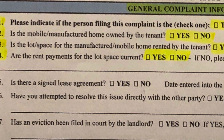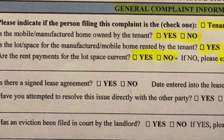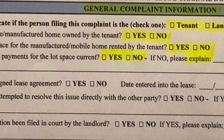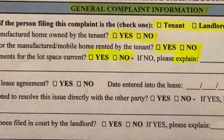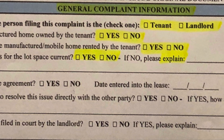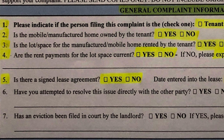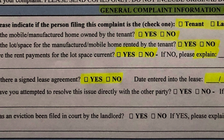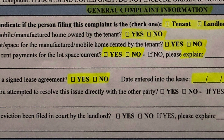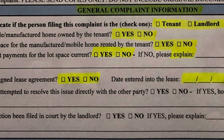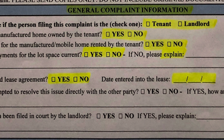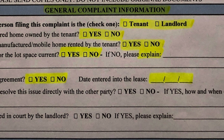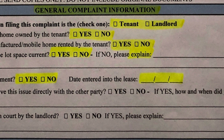Number four: are the rent payments for the lot space current? Mark yes or no. If they're not current, please explain why you are behind. Number five: is there a signed lease agreement? Mark yes or no and enter the date of your latest signed lease. If you do not live in a Hearst Park, you're done. If you do live in a Hearst Park but have a previous and automatically renewed lease, mark the date, but after entering the date, write 'not a Hearst lease.'